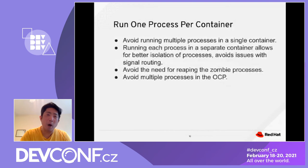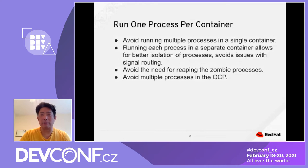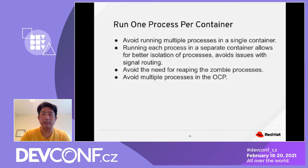Run only one process per container. This is really important to remember. We want to avoid running multiple processes in a single container because there is a high risk — you may get into a racing condition where one process modifies resources while another is trying to use them. You don't want to get into that situation. Each process in a separate container allows much better isolation of the process.